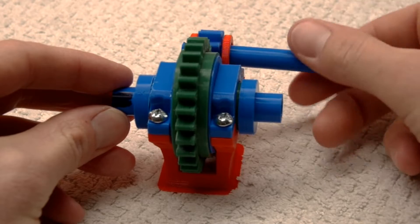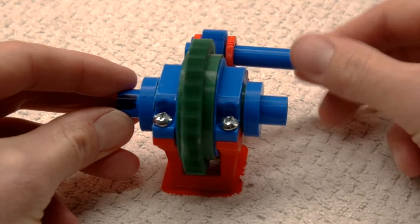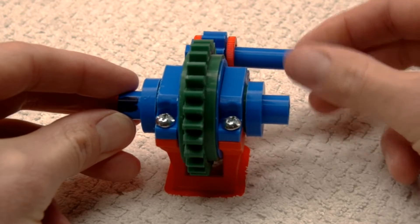If we lock the left side of the output and drive the input, the right output side will begin to rotate about twice as far as it normally would.